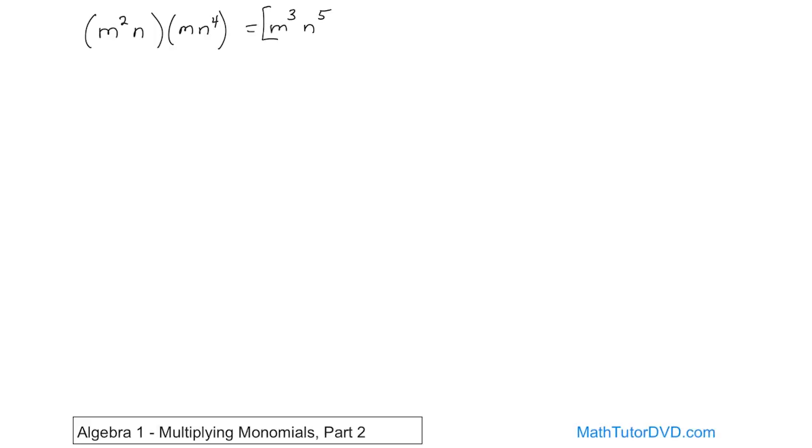That's really all you're doing. You're looking for the same bases and adding the exponents together. What if you have 4x to the fifth times negative 3x squared?